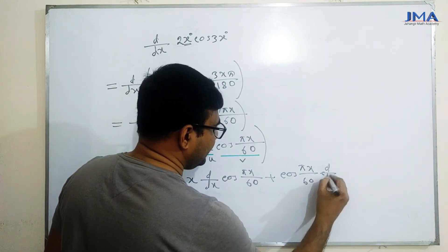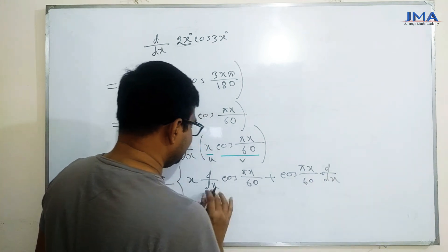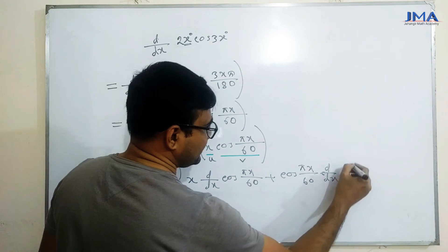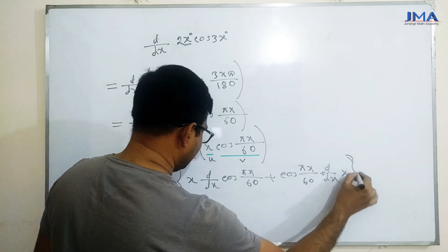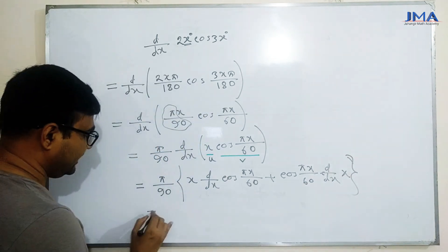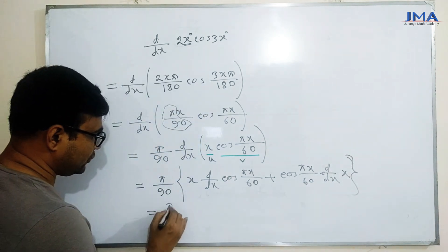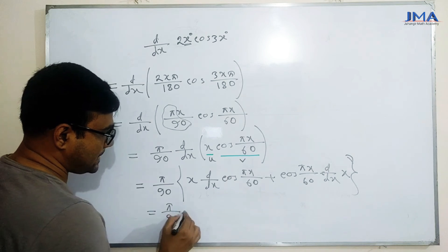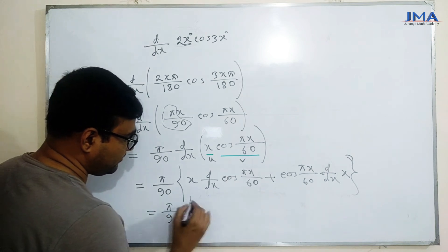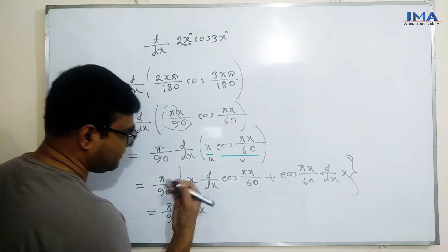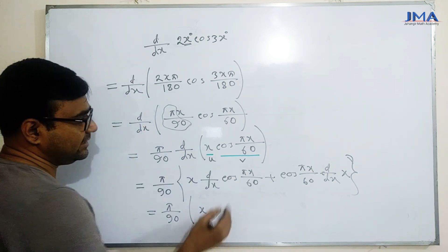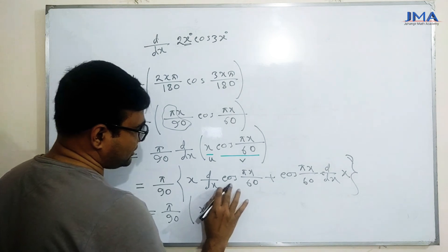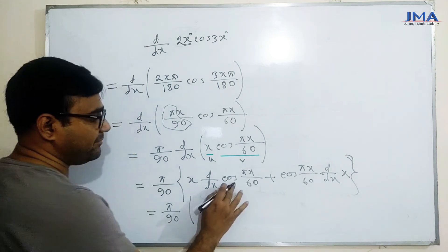d by dx — x का differentiation करने पर x वहाँ रहता है। अब यहाँ pi by 90 आता है। x वहाँ रहेगा, अब यहाँ अंतरी करो — minus।